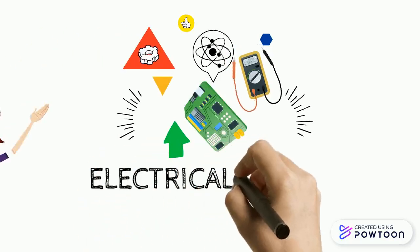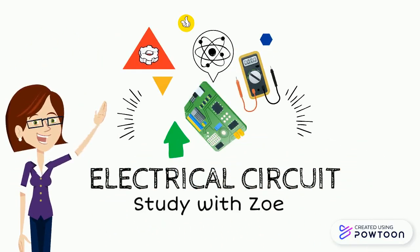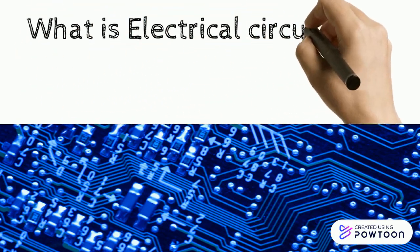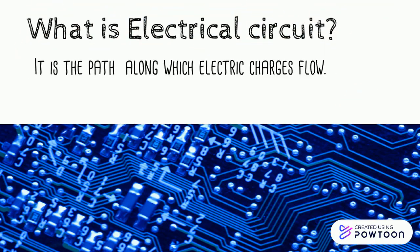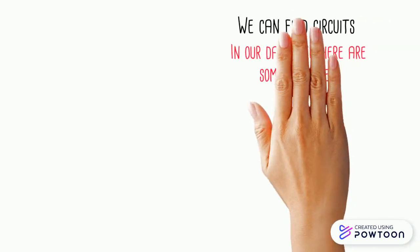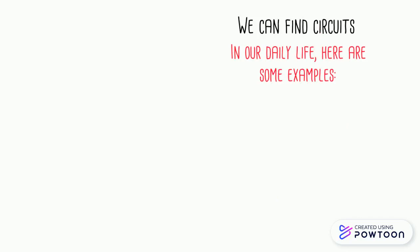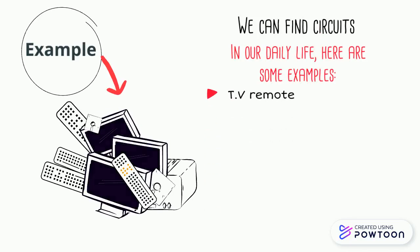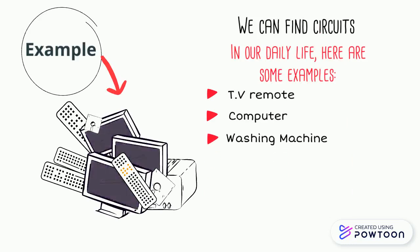Electrical circuit. What is an electrical circuit? It is the path along which electric charges flow. We can find circuits in our daily life. Here are some examples: TV remote, computer, and washing machine.